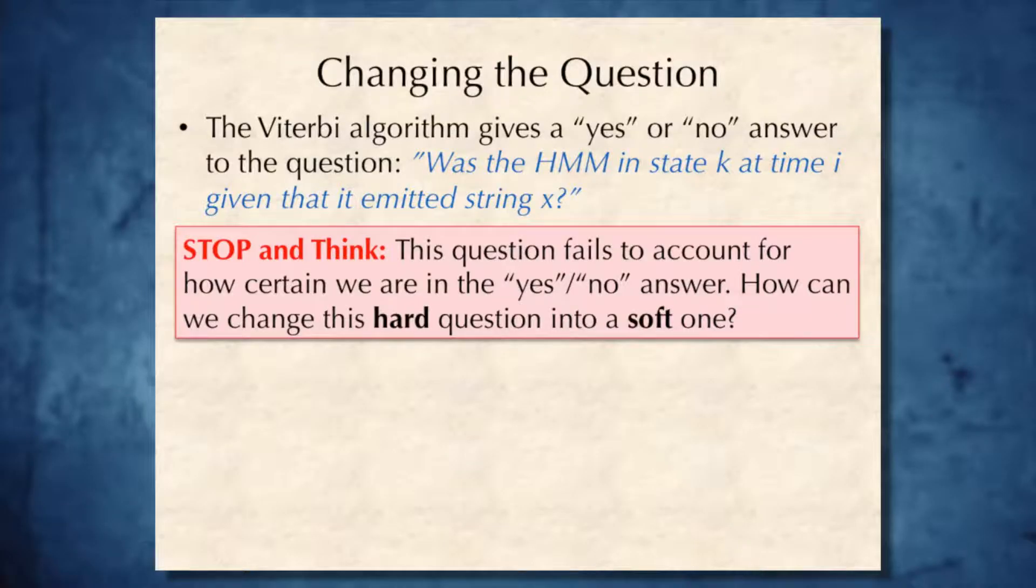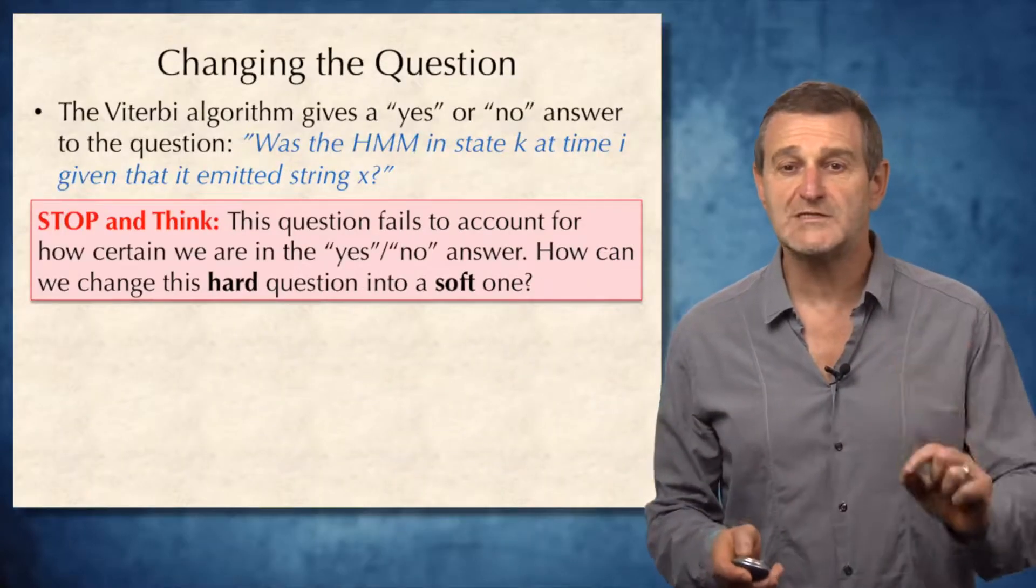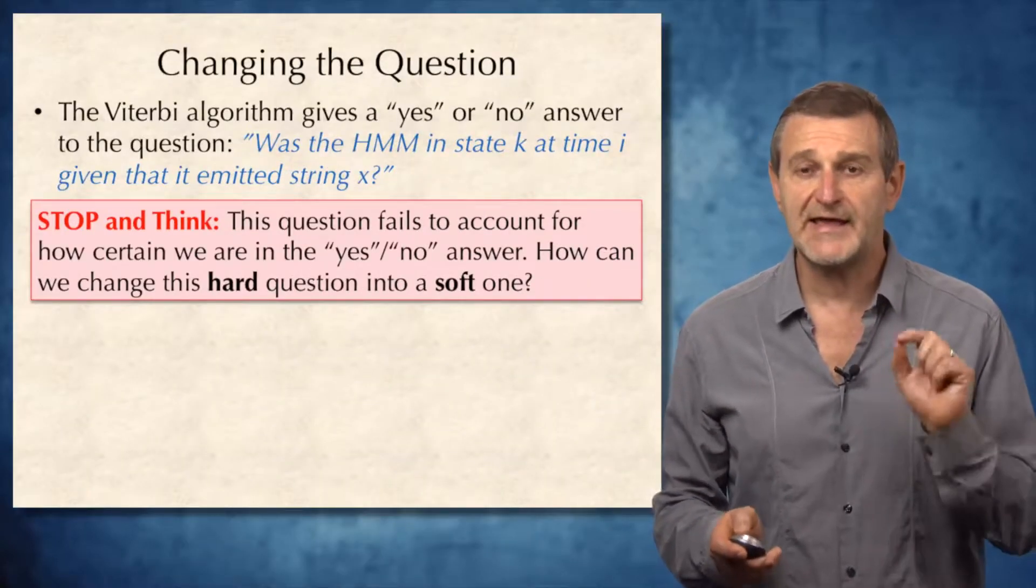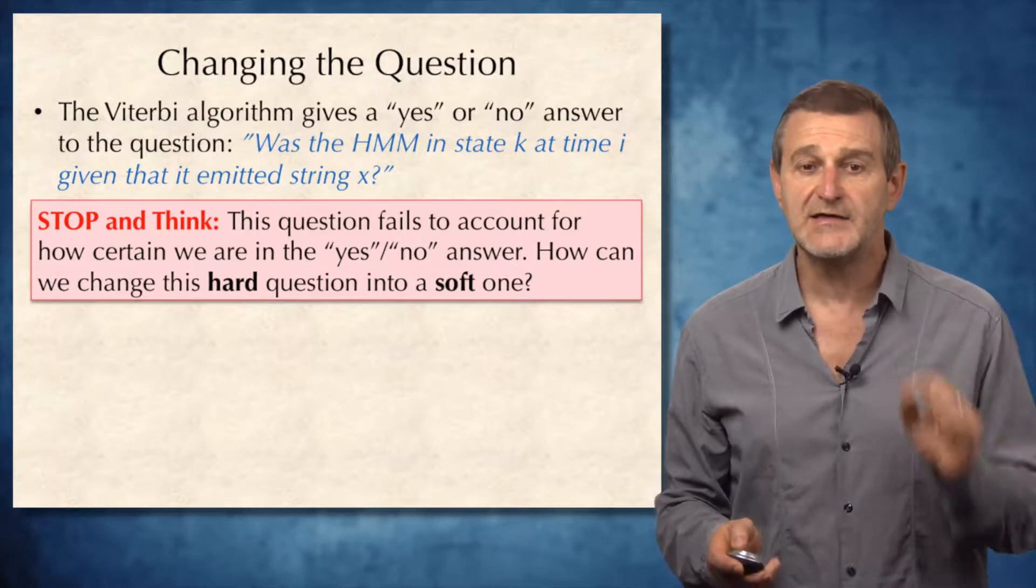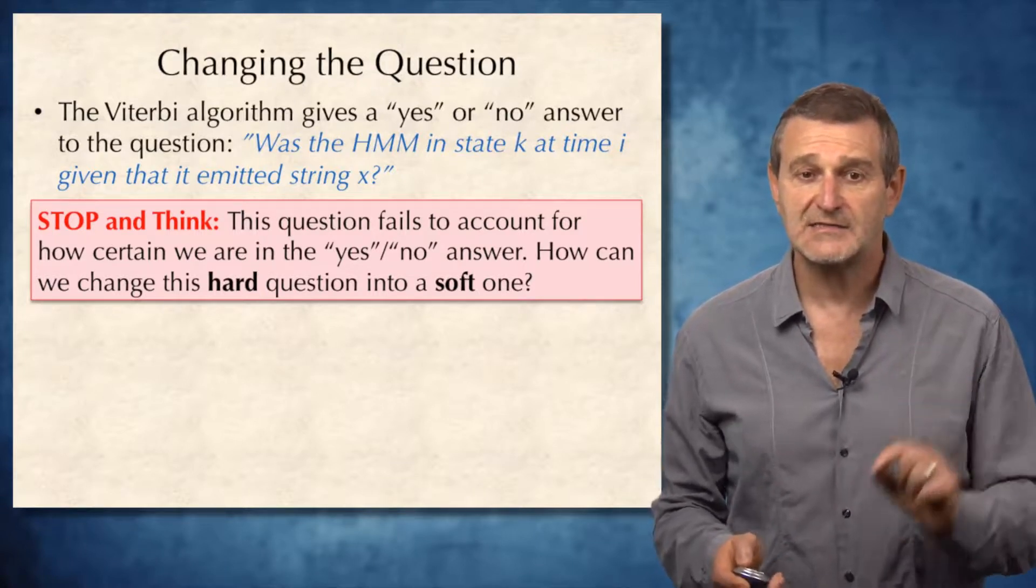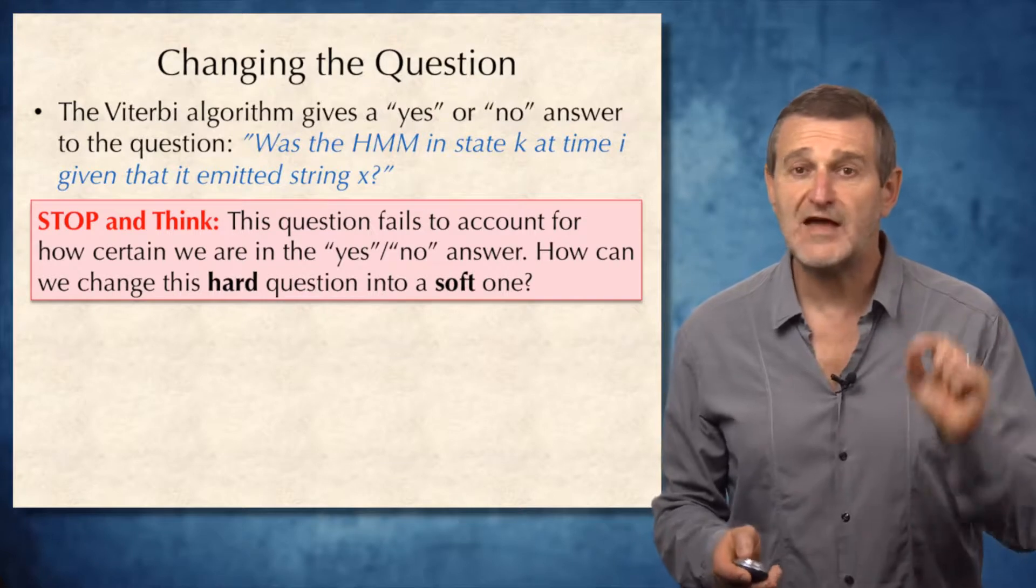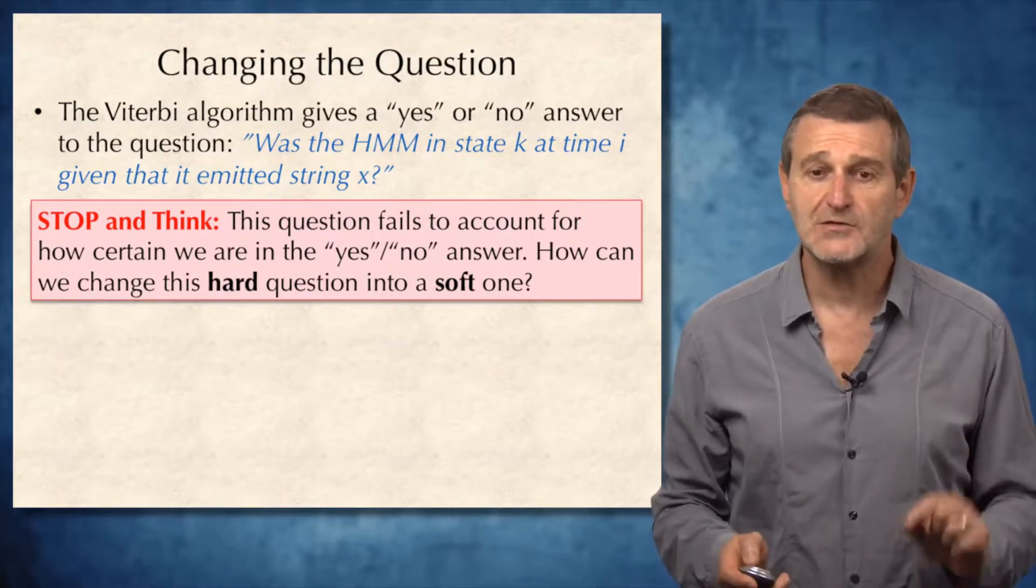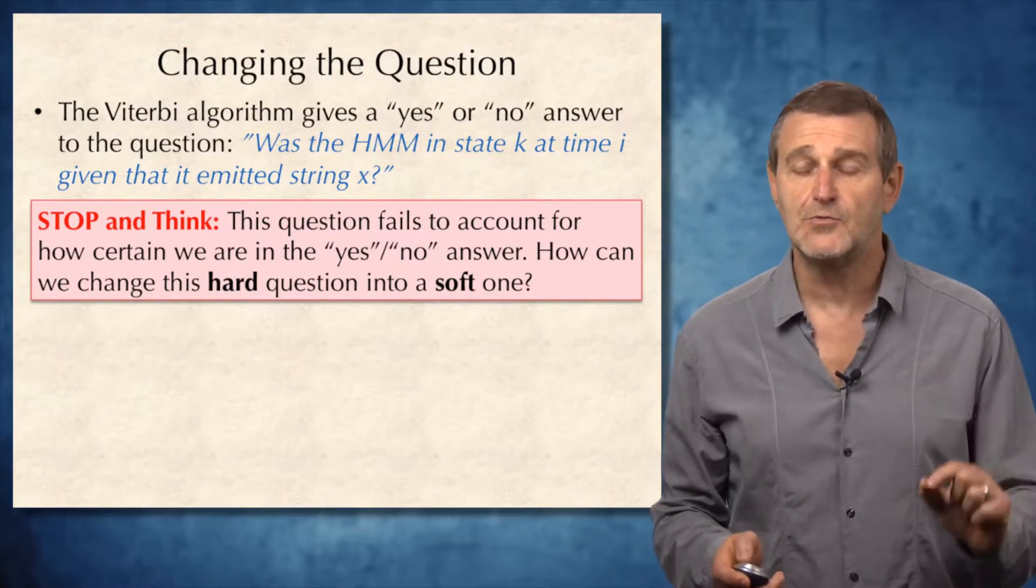The deficiency of the Viterbi learning is that it is based on the Viterbi algorithm that gives a strict yes or no answer to the question: was the HMM in state k at time i, given that it emitted string x? This question fails to account for how certain we are in the yes or no answer.